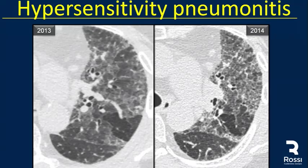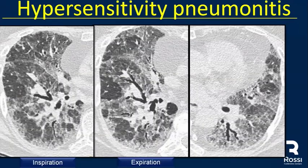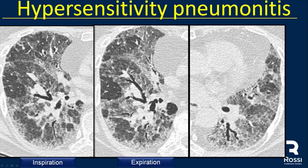Patients can also have fibrotic hypersensitivity pneumonitis, where we see mosaic attenuation with areas of high attenuation and triangular areas of low attenuation. On expiratory CT we see a triangular area of air trapping. Air trapping in chronic or fibrotic HP occurs in areas of normal lung, not in fibrotic lung. We also see traction bronchiectasis and some distortion of the lung in a patient with fibrotic HP.